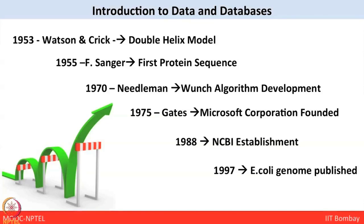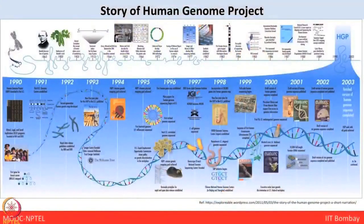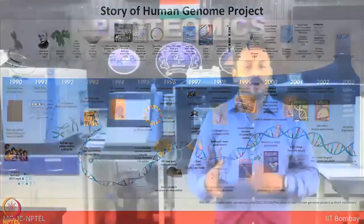In 1975, a major breakthrough happened when Microsoft Corporation was founded by Bill Gates and Allen. Further in 1988, the National Center of Biotechnology Information — NCBI — was established. In 1997, the genome of E. coli was published. After that, the biggest breakthrough was the publication of the Human Genome Project around 2004, and ever since the amount of data generated has been huge and continues to grow.